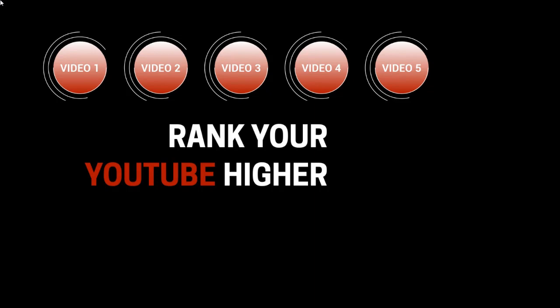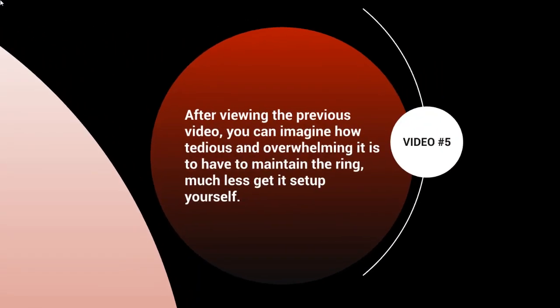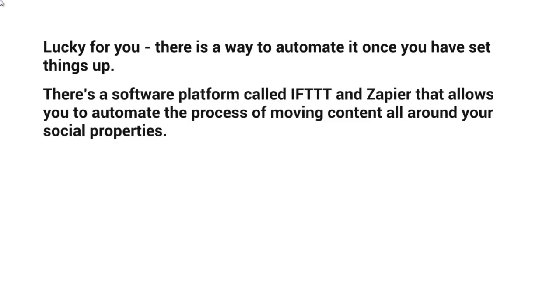Hello and welcome back. This is video number five, and we're going to talk about how to automate the ring. Now that you understand how everything is interlinked and connected, and how you can be creative and make your own ring — after viewing the previous video, you can imagine how tedious and overwhelming it is to have to maintain the ring, much less get it set up yourself. But luckily, there is a way to automate it once you have set things up.